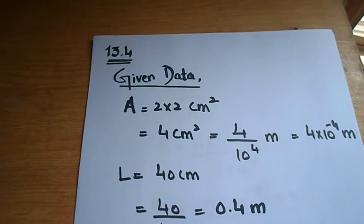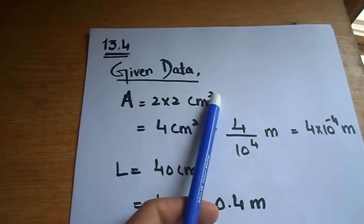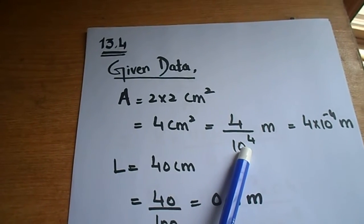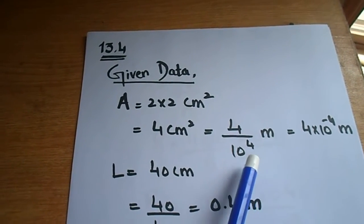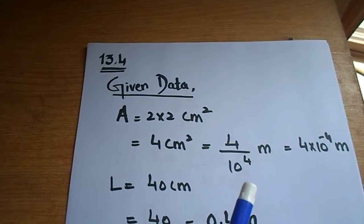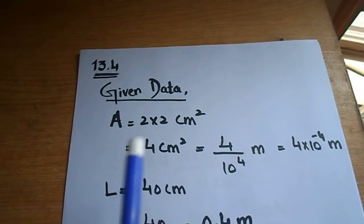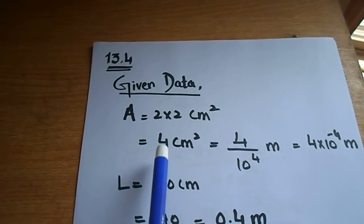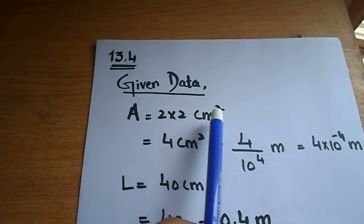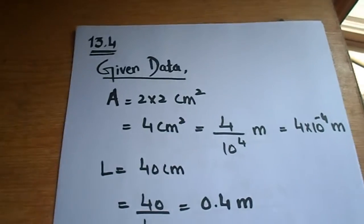Since we have cm square, this is why we will not simply divide by 100. Because if we have 1 cm, we divide by 100. But we have cm square, so we will divide by 100 square, which means we will divide by 10 to the power 4.